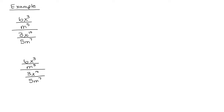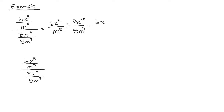We're going to simplify this complex fraction using each method. Using the first method, we have a simple fraction in the numerator and a simple fraction in the denominator. So we can write that as 6x cubed over m to the fifth divided by 3x to the tenth over 5m to the seventh. Since we're dividing by a fraction, that's the same thing as multiplying by the reciprocal. So we have 6x cubed over m to the fifth times 5m to the seventh over 3x to the tenth.